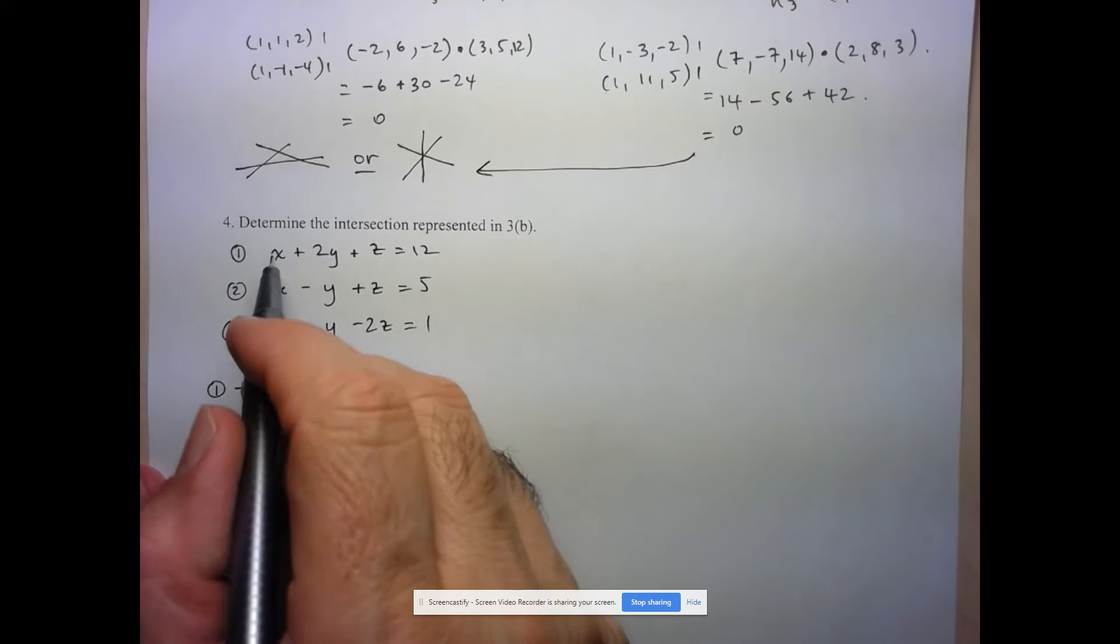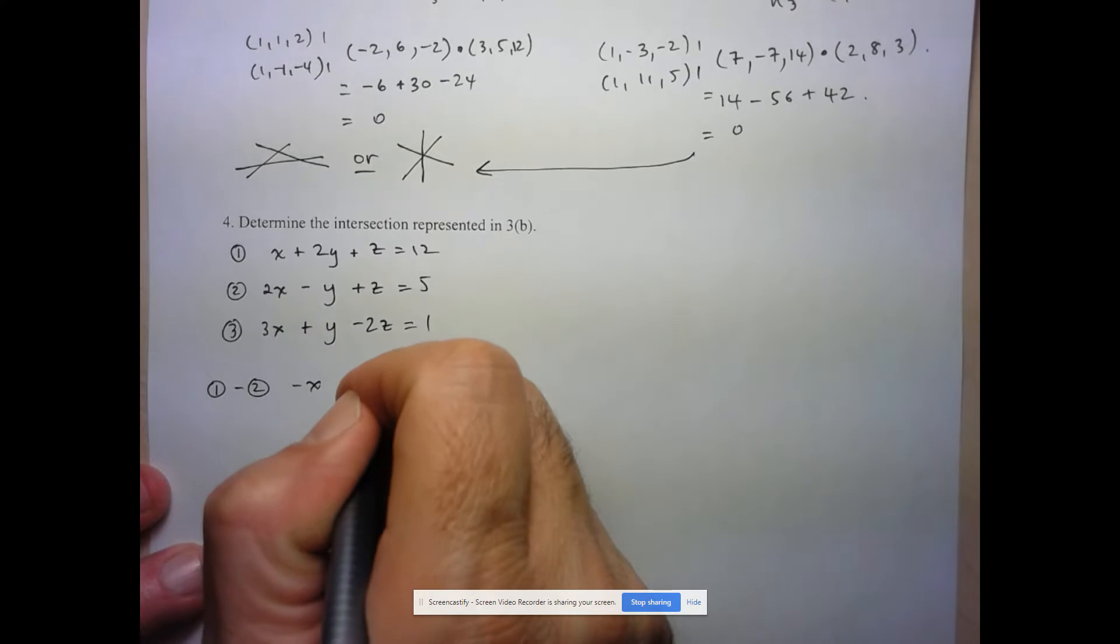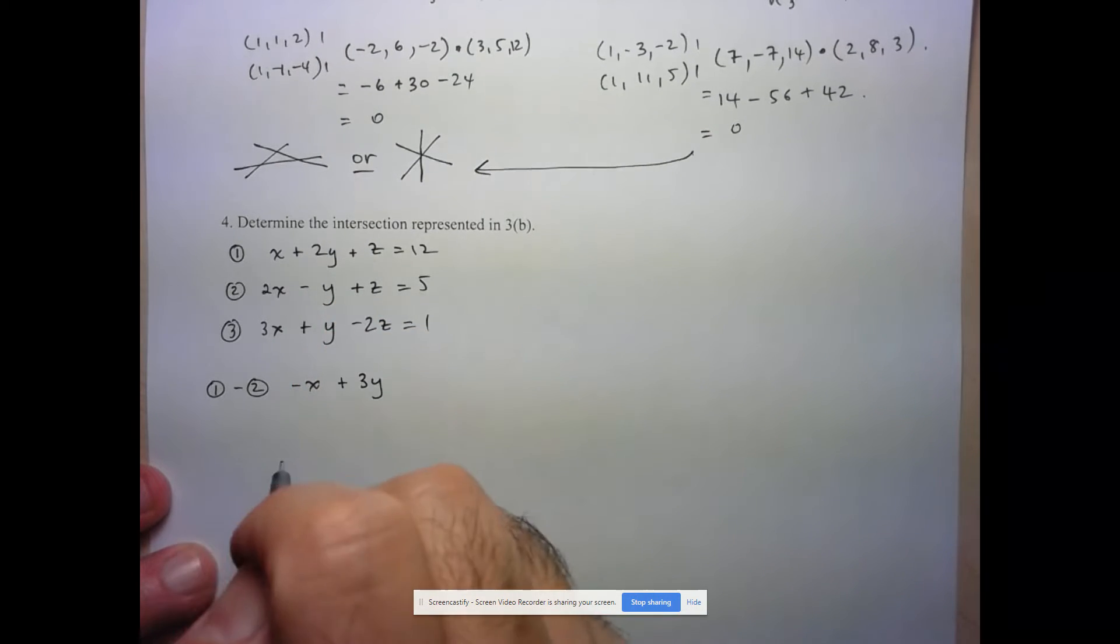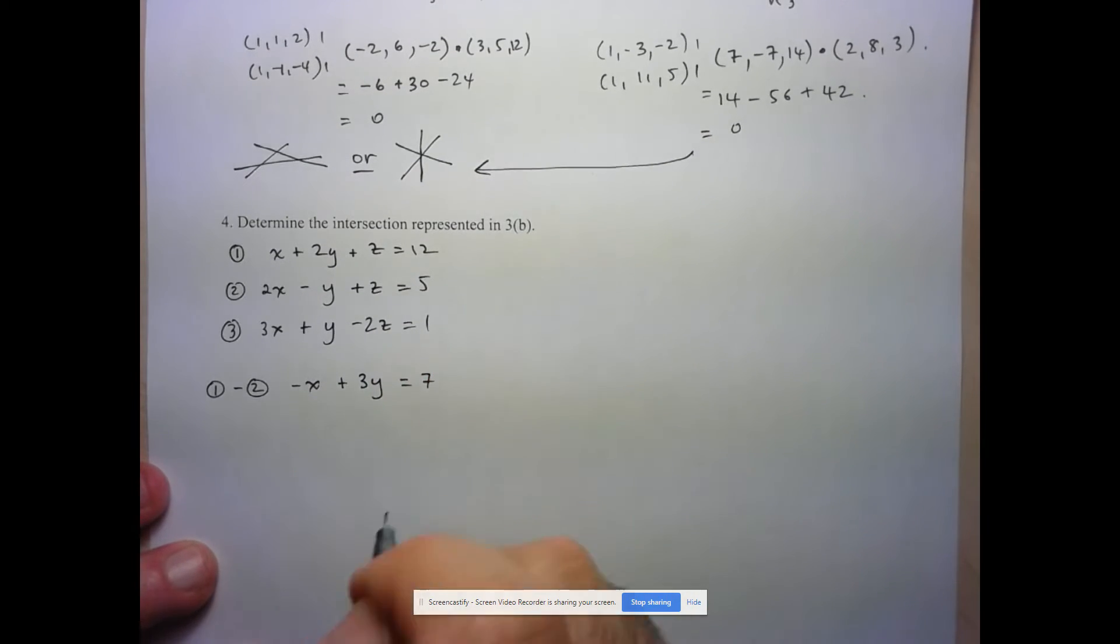Let's see what happens. So x minus 2x is negative x. Here we have 2 minus negative 1, so plus 3y. Z minus z, of course, cancels out exactly what I expected. And then equals 7.